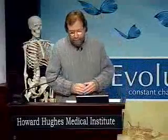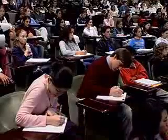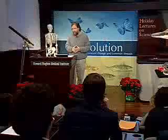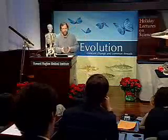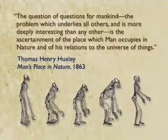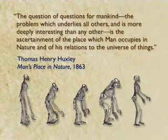But his foremost and most formidable ally, Thomas Henry Huxley, didn't dodge it at all. Shortly after the Origin of Species, he wrote a book called Man's Place in Nature. The question of questions for mankind — the problem which underlies all others and is more deeply interesting than any other — is the ascertainment of the place which man occupies in nature and of his relations to the universe of things. In the sketch at the bottom, that's the original frontispiece from Huxley's Man's Place in Nature.